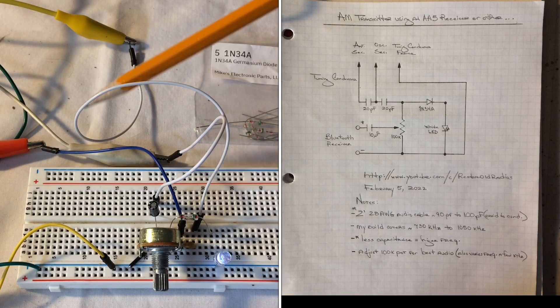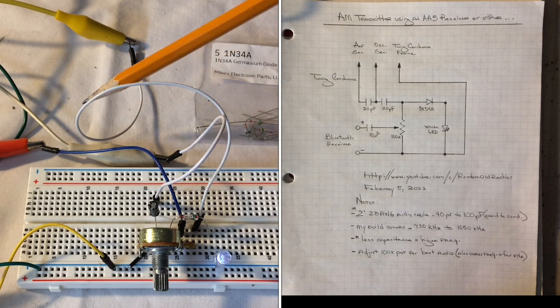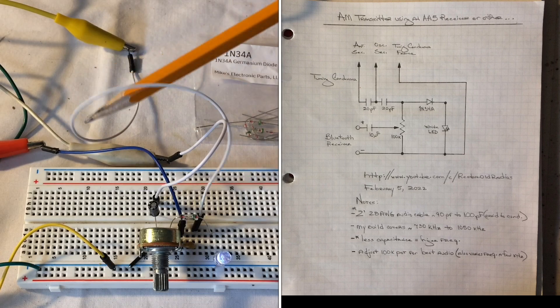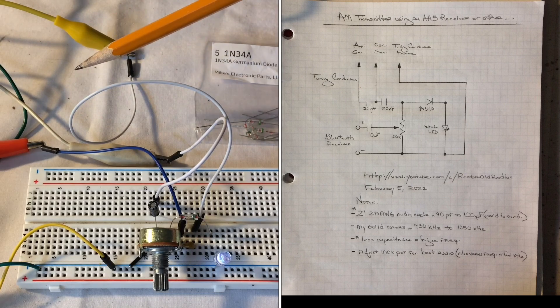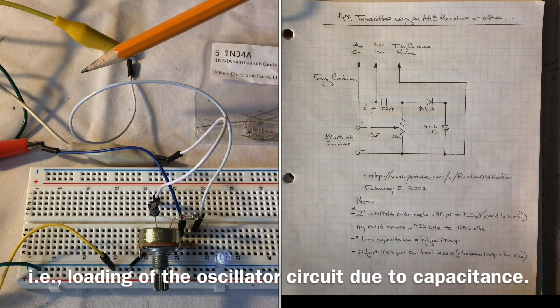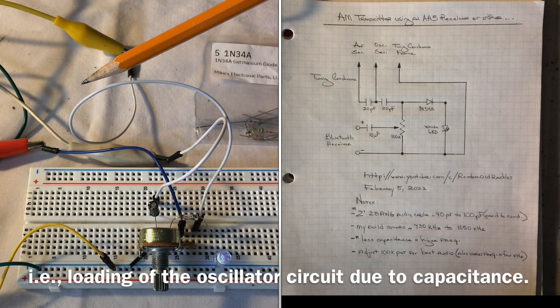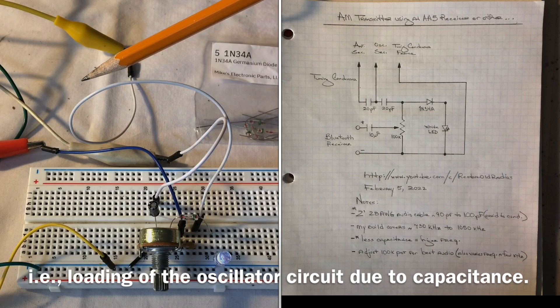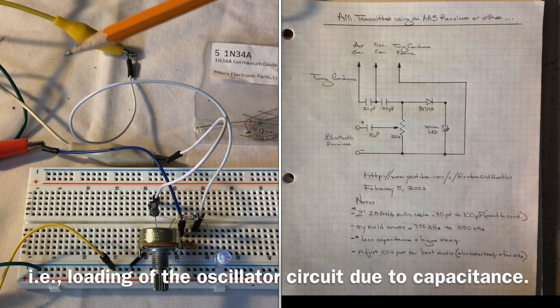And we know less capacitance will drive a higher frequency. So with increasing the capacitance here, I'm resonating lower. So in my case I can cover about 730 to 1050 with the design on the breadboard using the audio cable.